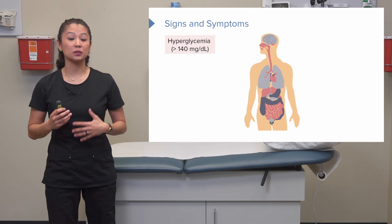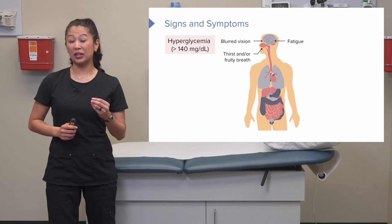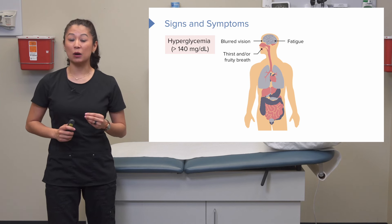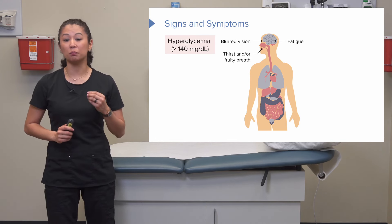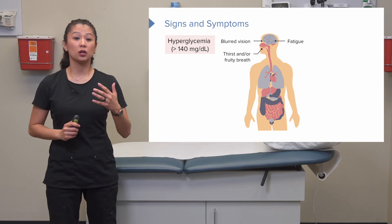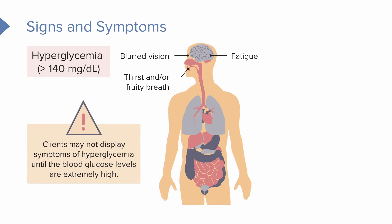Let's talk about signs and symptoms of both conditions. For hyperglycemia — an elevated blood glucose defined as greater than 140 milligrams per deciliter — you may see fatigue, blurred vision, excessive thirst, or fruity breath. Fruity breath typically means the blood glucose is in extremely elevated ranges and the patient could be close to going into a coma. This is an emergency. Some clients may not display symptoms of hyperglycemia until the blood glucose is extremely high.